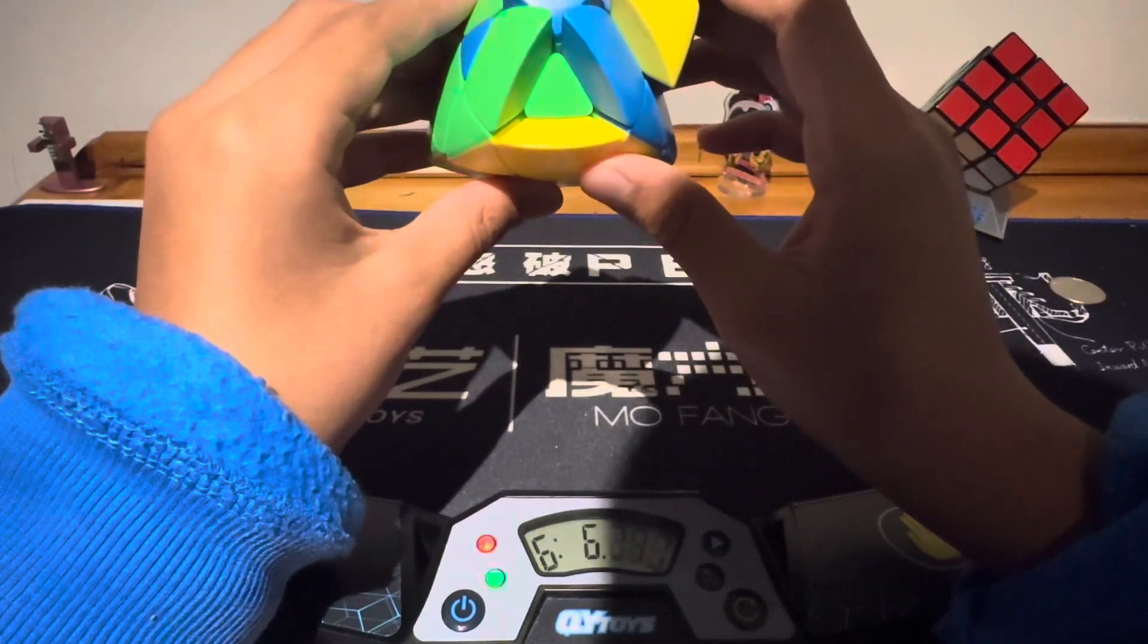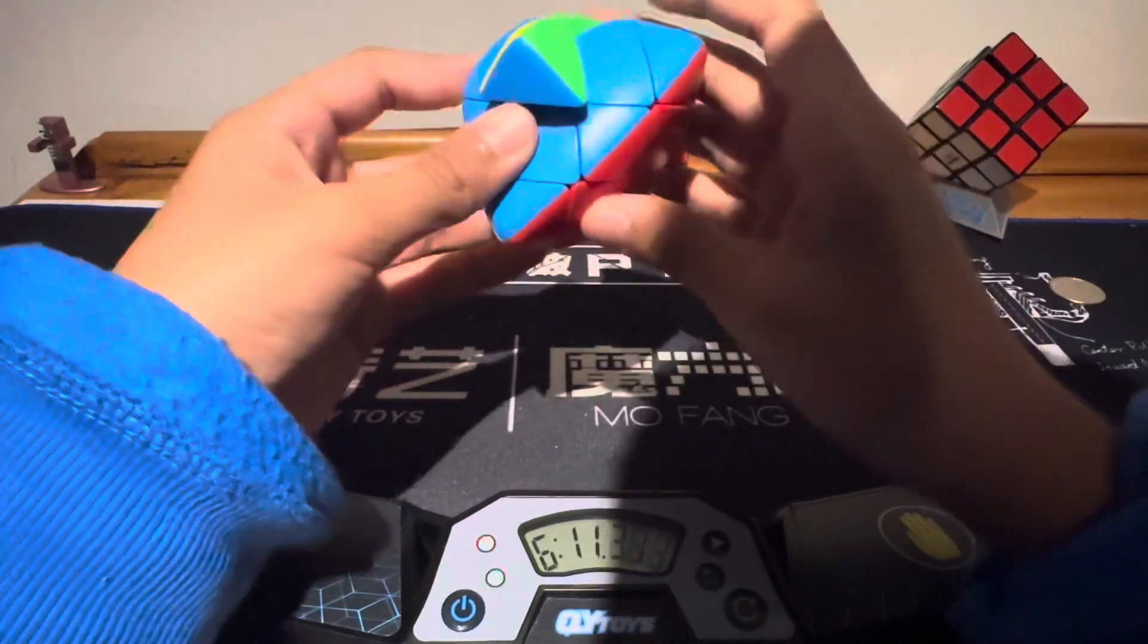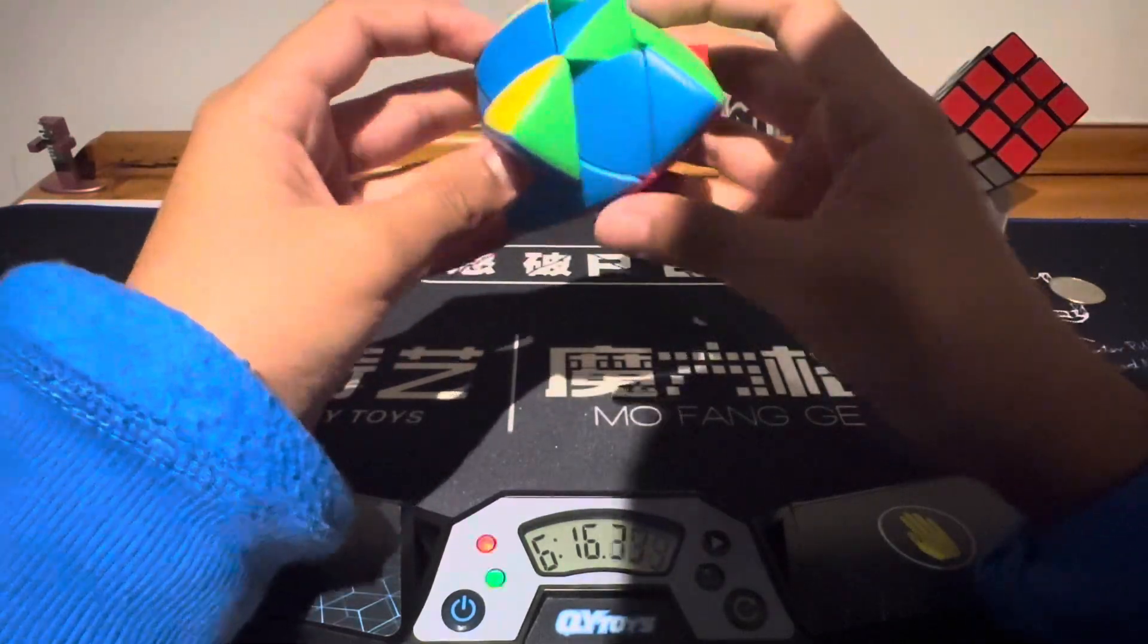I think... Wait, no, this is one of them, an A perm, I think. It's this one, I think, because the edges are solved and stuff, so it makes... This goes there, which goes there, it goes clockwise.